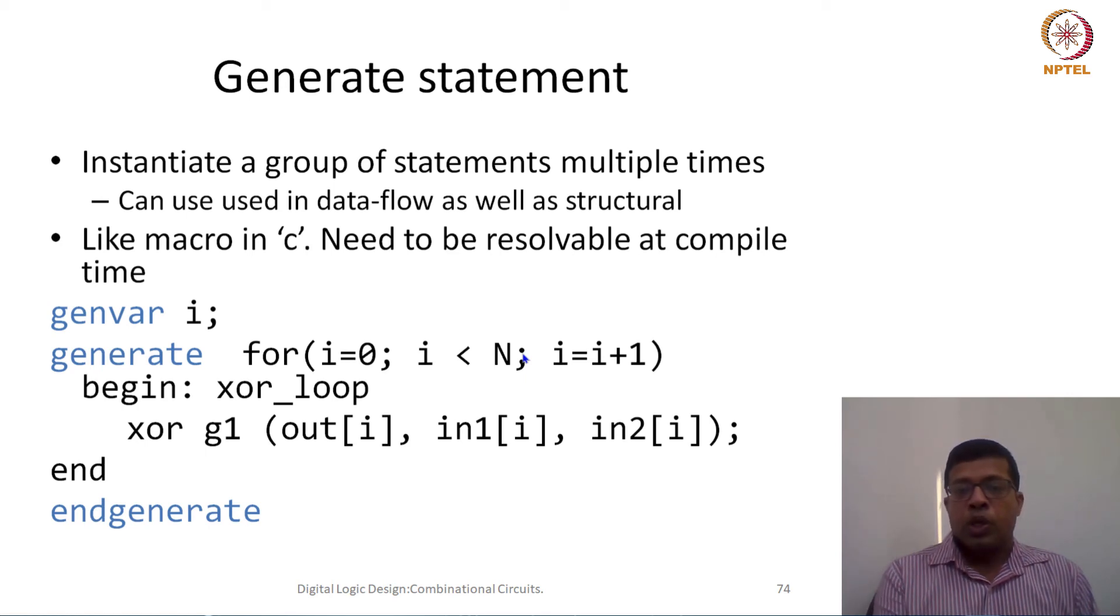You can see that after this for, we are saying begin, and this end is for this begin. This for loop has a begin, so this is the end for this for loop. For generate we have to finish it as endgenerate. This is the generate block.